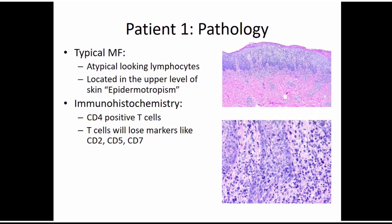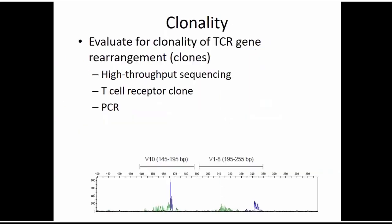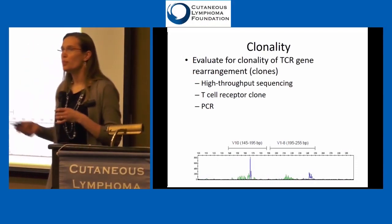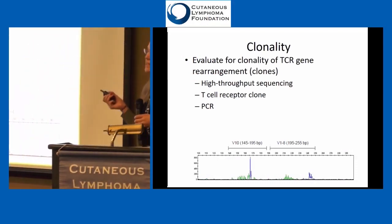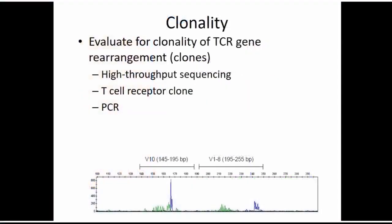The immunohistochemistry looks for particular markers in the skin, like CD4 or CD20. What happens with cancer cells is that the certain number of CD markers supposed to be on the surface of a normal lymphocyte may be lost over time. So if it's not expressing CD5 or CD7 or CD2, that's abnormal — another signal to the pathologist that this lymphocyte is not behaving the way it should. A third part the pathologist puts together is clonality. Clonality can have a lot of different names — a T cell receptor clone, a PCR test, high throughput sequencing. Those things are all trying to figure out: is there one cell that's multiplying itself?